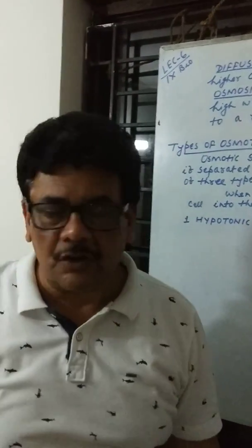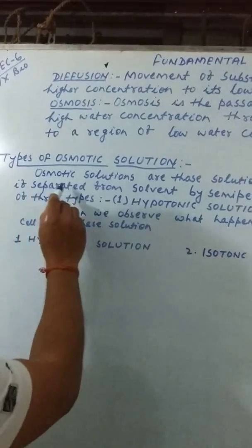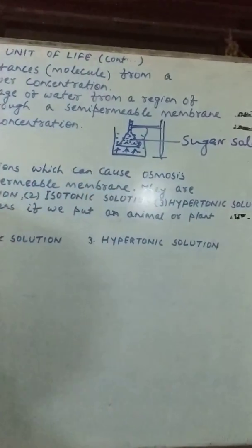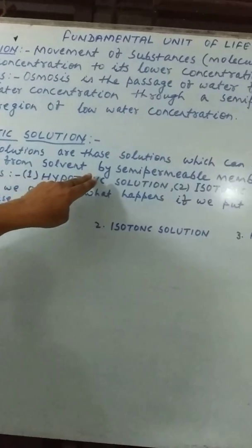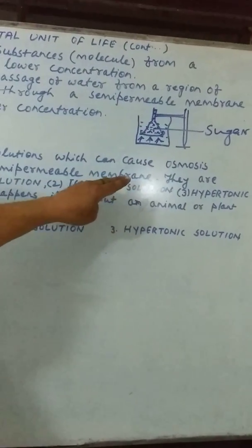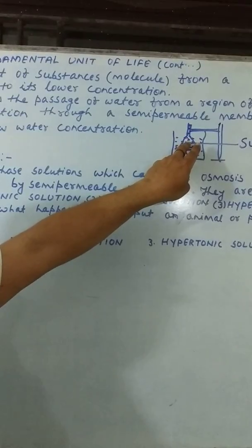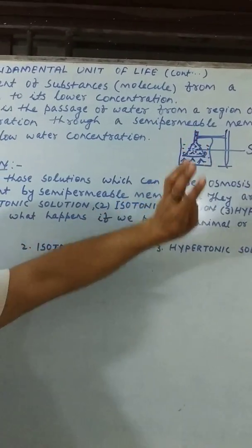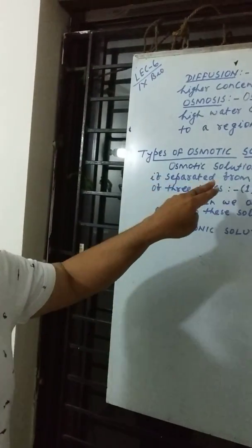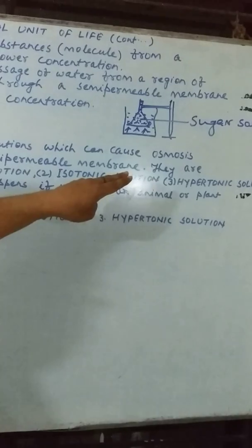By the process of osmosis, water enters through the cell, and roots absorb water from the soil by the process of osmosis. Next, we have to discuss types of osmotic solutions. Osmotic solutions are those solutions which can cause osmosis if separated from a solvent by a semi-permeable or living membrane. They are of three types: hypotonic solution, isotonic solution, and hypertonic solution.